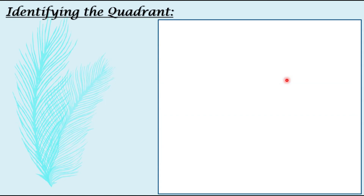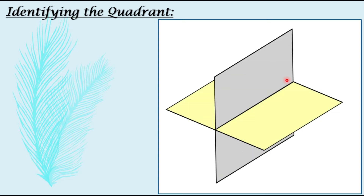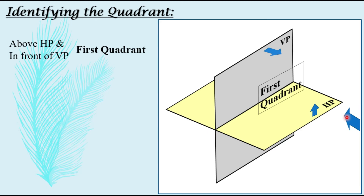Now, once we are clear with the projection, we need to understand the quadrant system — how to identify in which quadrant the object is placed. We have a four-coordinate system. The observer is standing here, looking at all four quadrants from this side. This is the horizontal plane HP and this is the vertical plane VP. If we are talking about an object placed above HP and in front of VP, then the object is placed in the first quadrant.